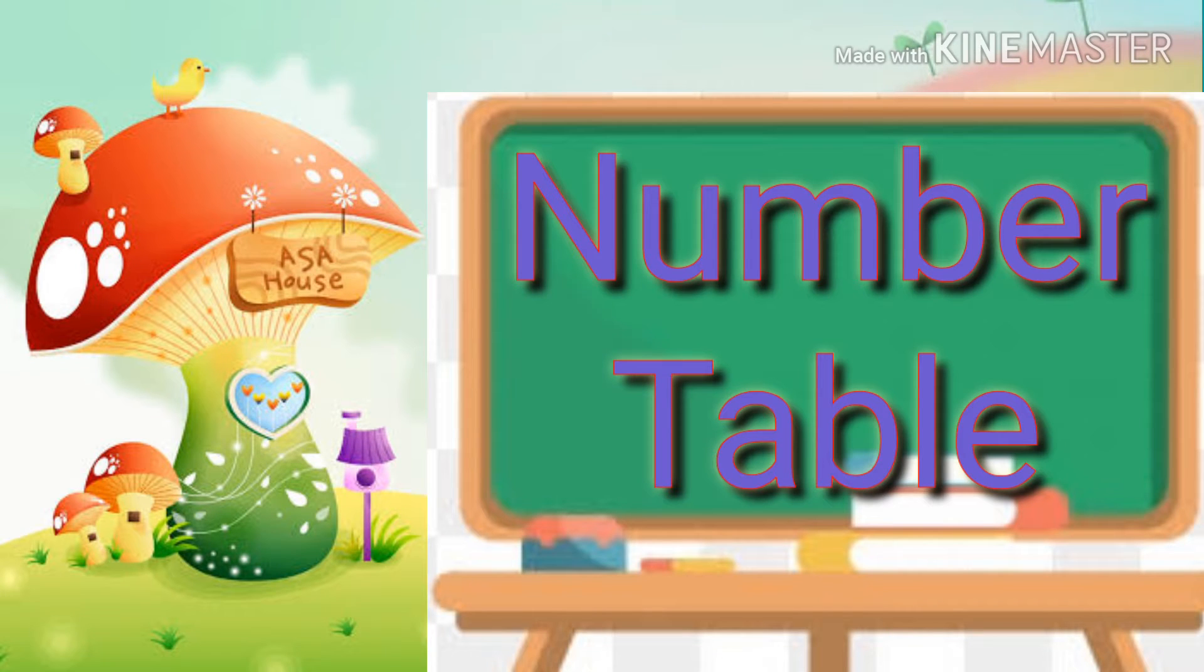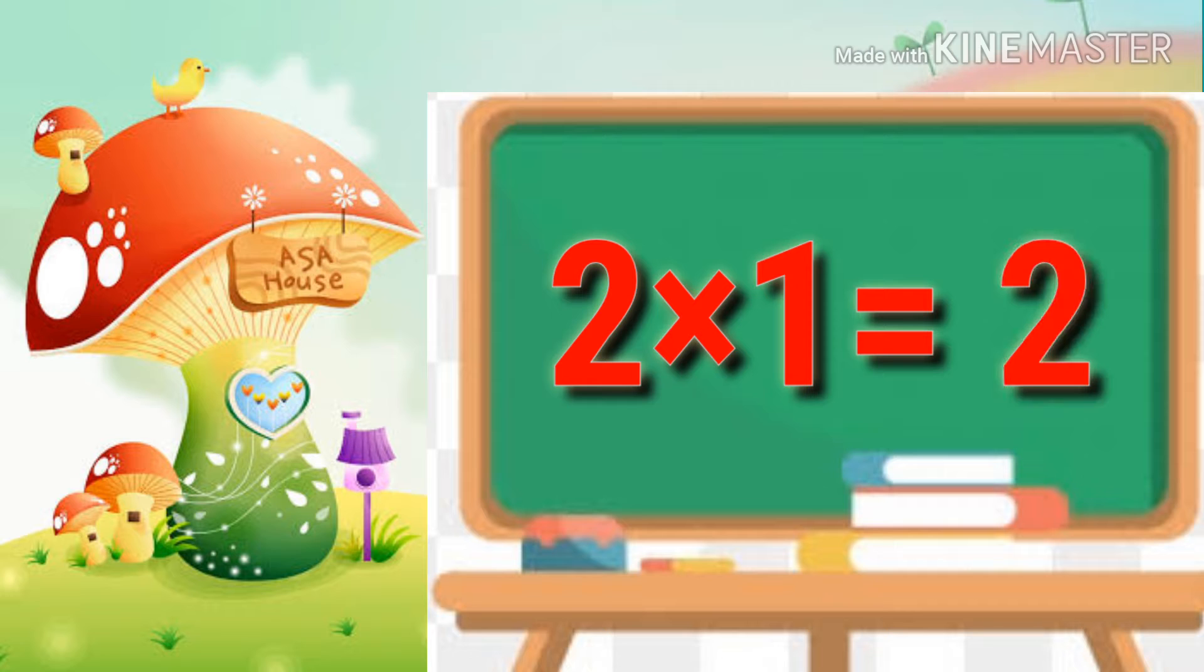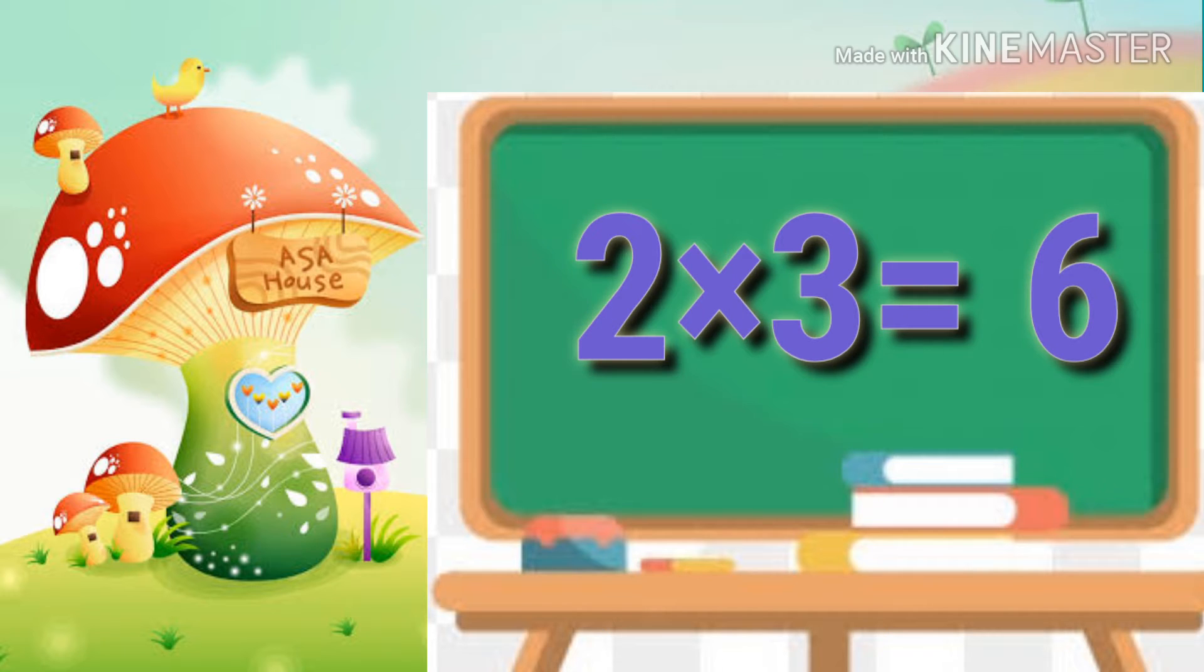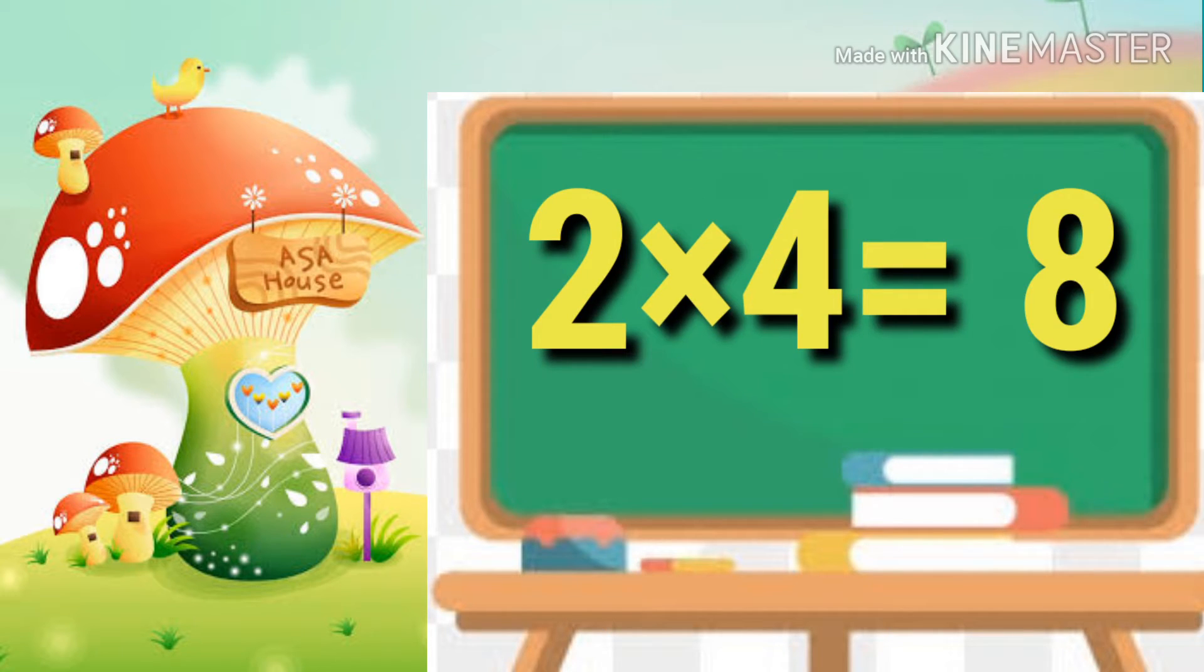Hi kids. Today we are learning the number table. Then let's start. 2 1's are 2, 2 2's are 4, 2 3's are 6, 2 4's are 8.